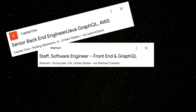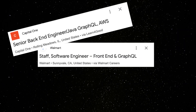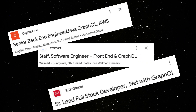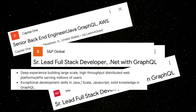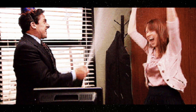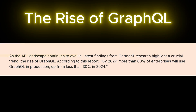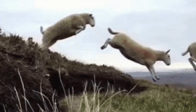Have you noticed the spike in demand for GraphQL engineers lately? Looks like it is still the hottest party in tech. I just saw this report from Gartner that says by 2027, 60% of enterprises are going to be using GraphQL APIs. And where the big guys go, you know the startups aren't far behind.